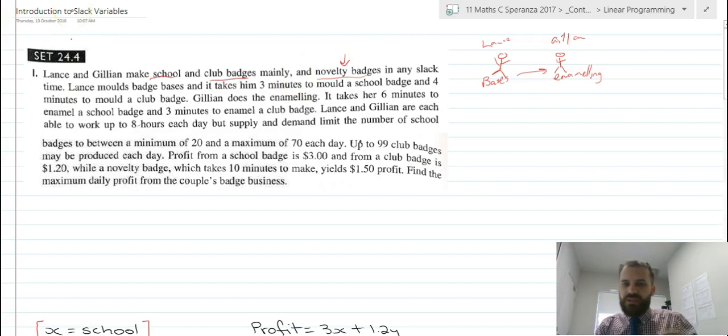So the basic way of tackling this kind of question, using the geometric approach to linear programming, is to optimize things based upon their main business. So their main business is school badges and club badges. Find the optimised solution, and then see if there's any leftover time for either Lance or Julian to make novelty badges. And that's just cream on top of the profit they're already making.